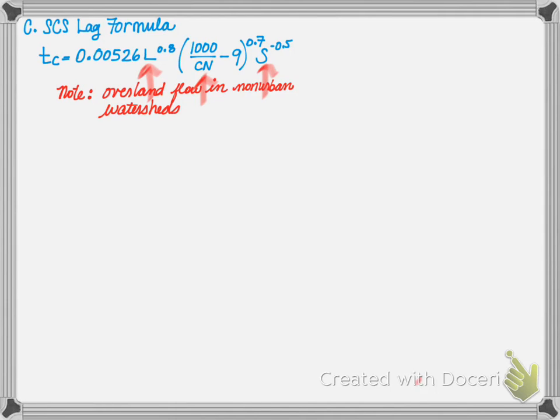It should be noted that this method is based for overland flow in non-urban watersheds. Again, if you have multiple land uses, which is subdivided within your watershed, you can sum this equation.